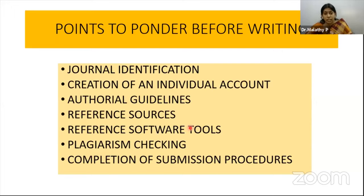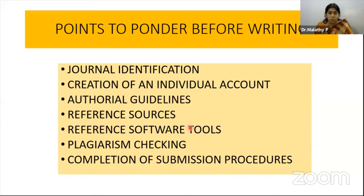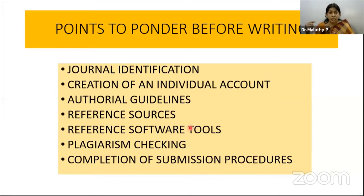When we start to write an article — say you are a PhD scholar — you have to identify your journal first. How do you identify your journal based on your field of specialization and area of research? Based on that, you select a journal. After selecting a journal, when it is an indexed journal, you have to create a login account. You create a login ID and proceed.